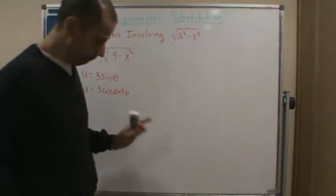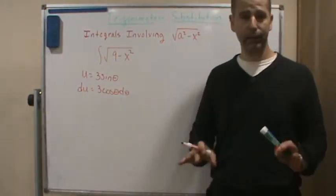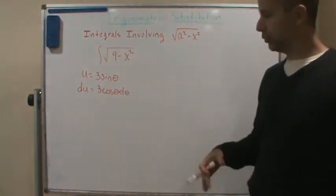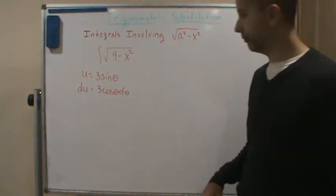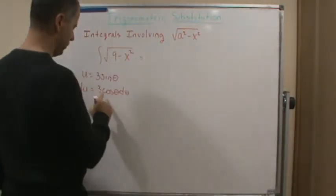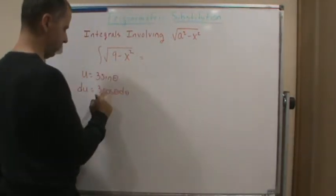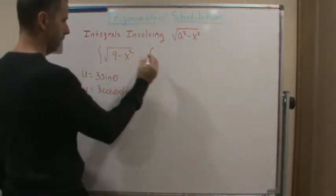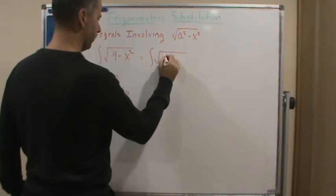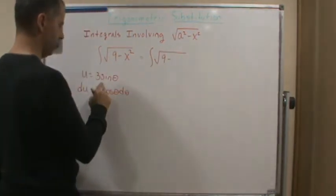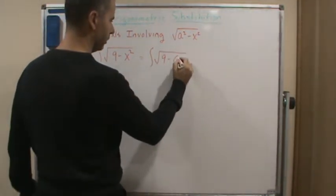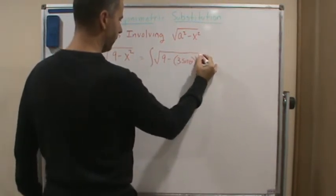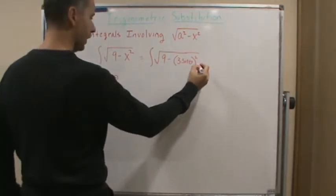Now, don't worry about why I'm using this substitution. I'm going to get to that later. But watch what happens when I do this substitution. So all I'm going to do is substitute in here with these, and now my integral becomes the square root of 9 minus 3 sine theta squared times...